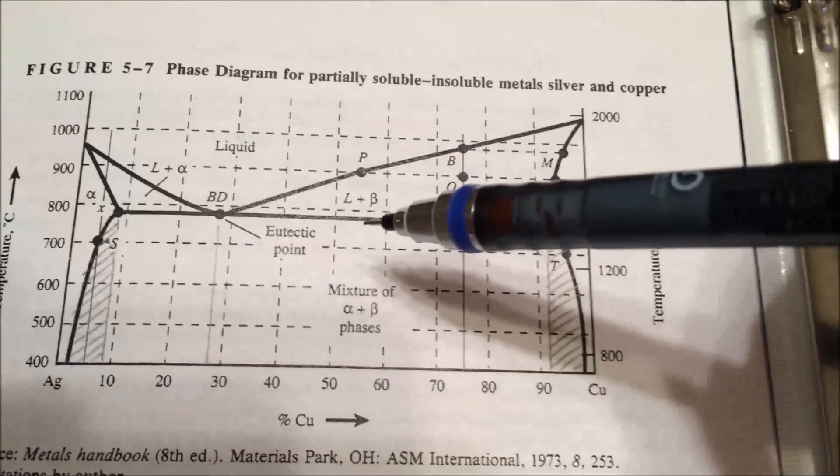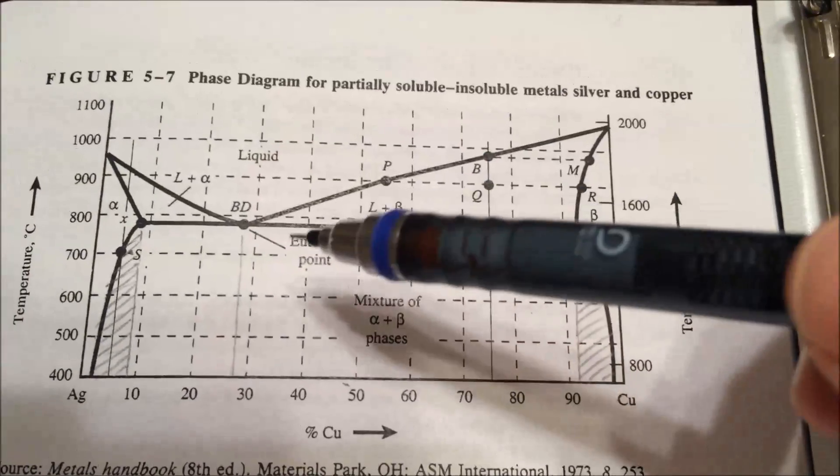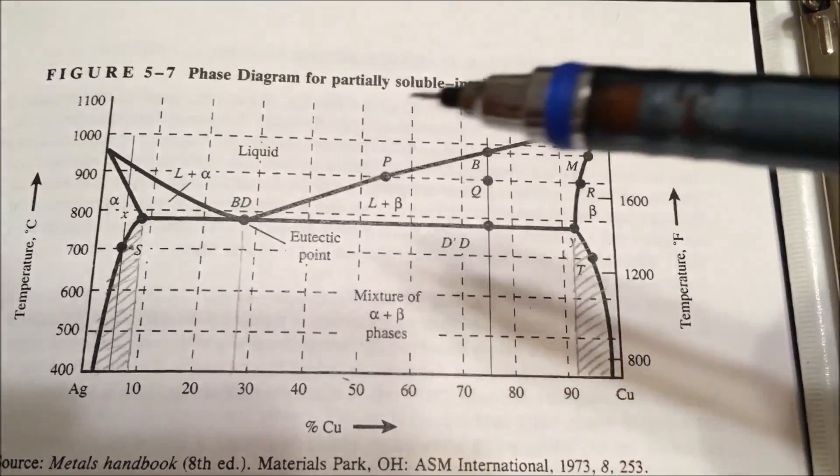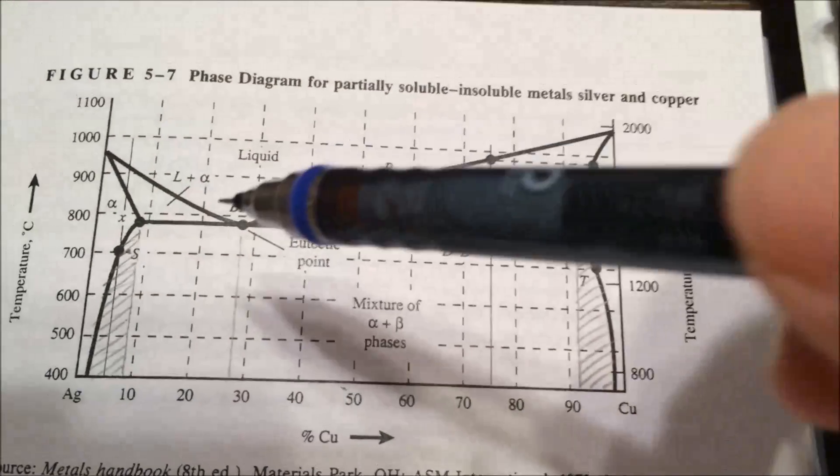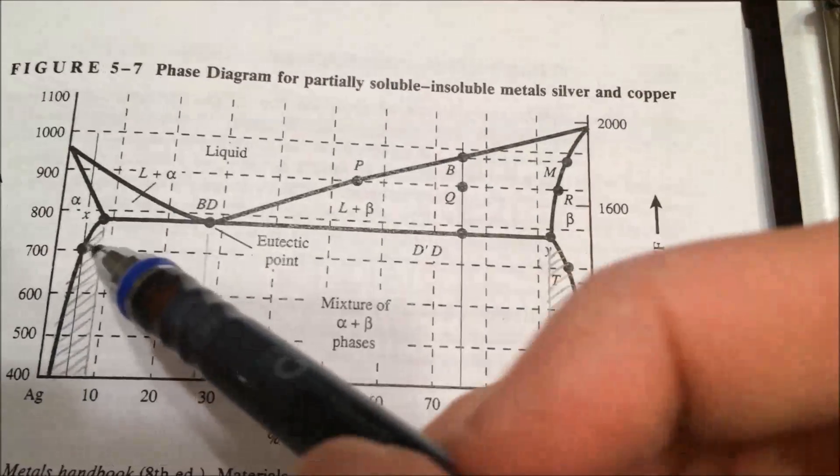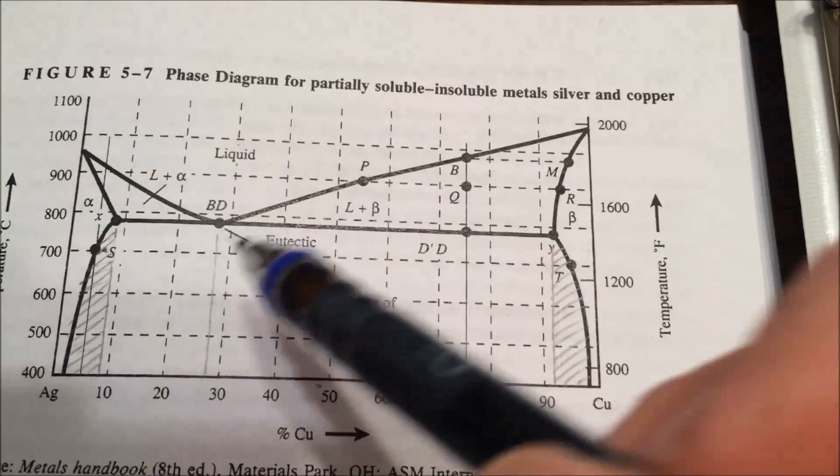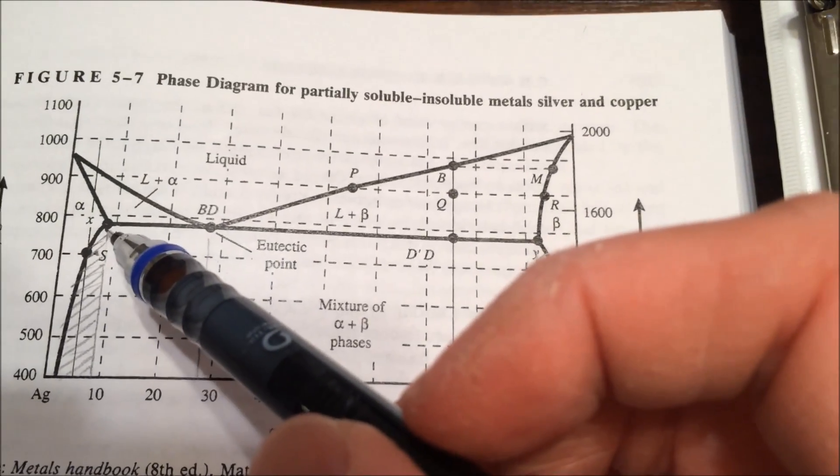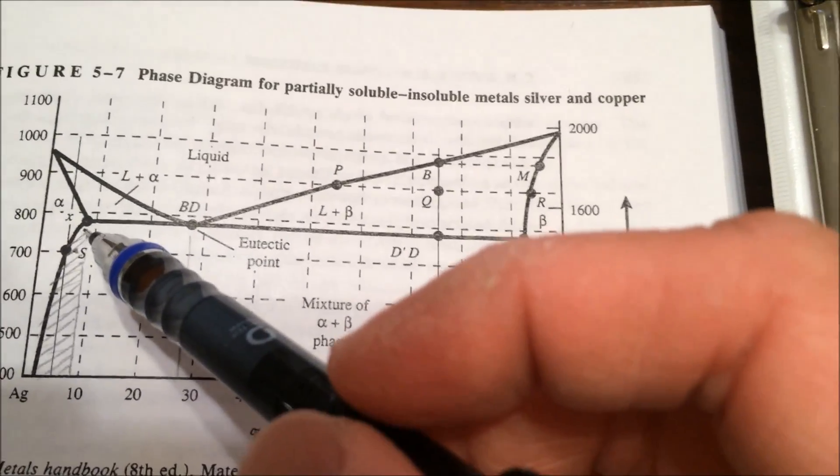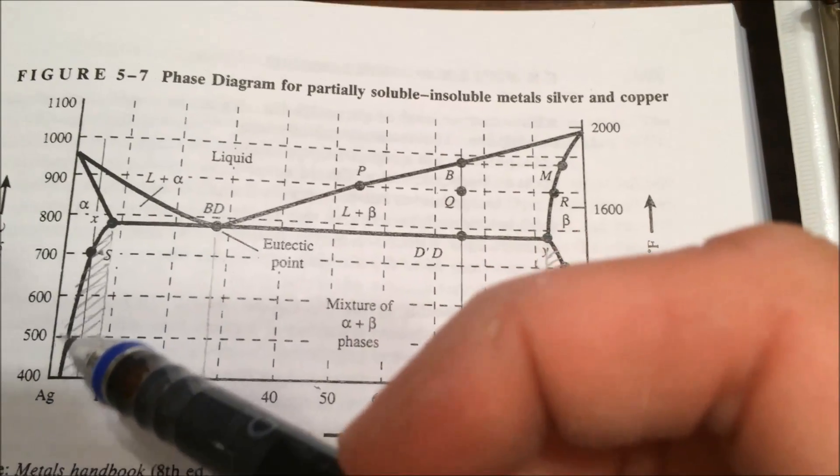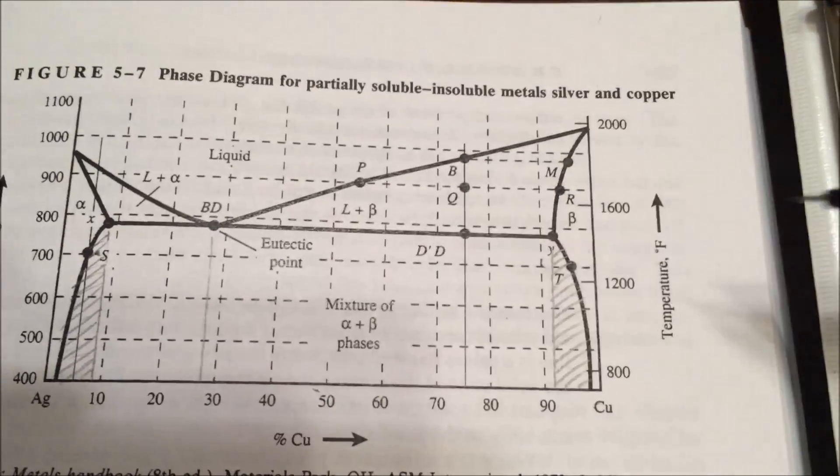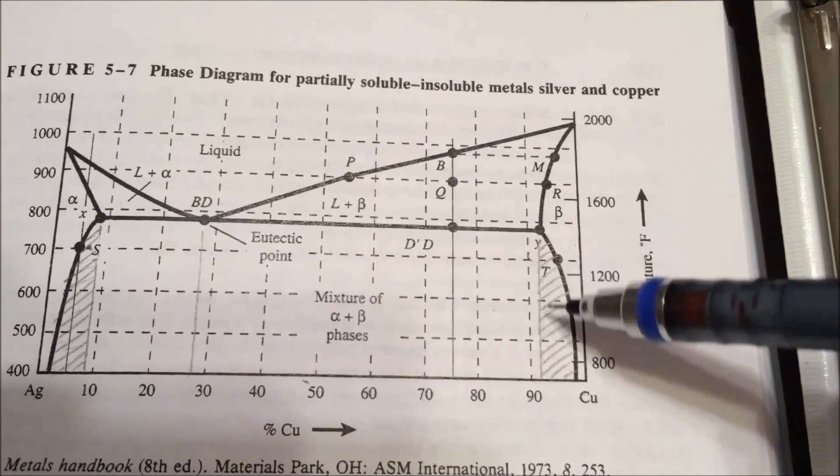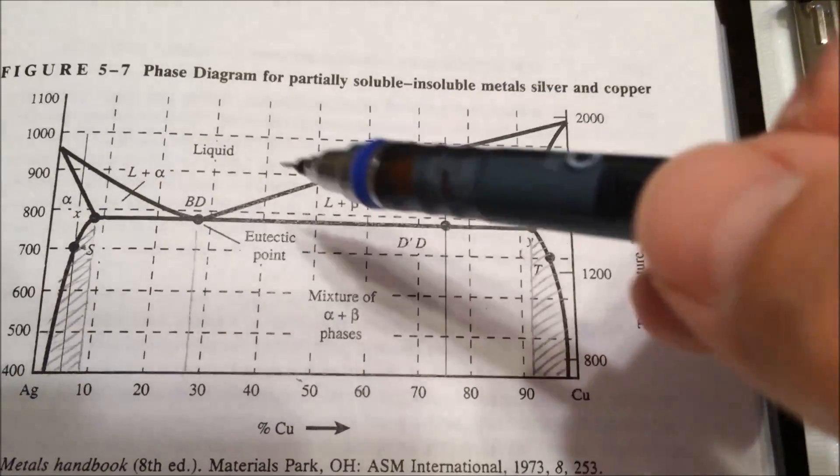This is for partially soluble metals. What we're going to look at specifically today is the partially soluble mixture of alpha and beta, not eutectic or non-eutectic. That would be this region under here that I have shaded, or this region over here that I have shaded.